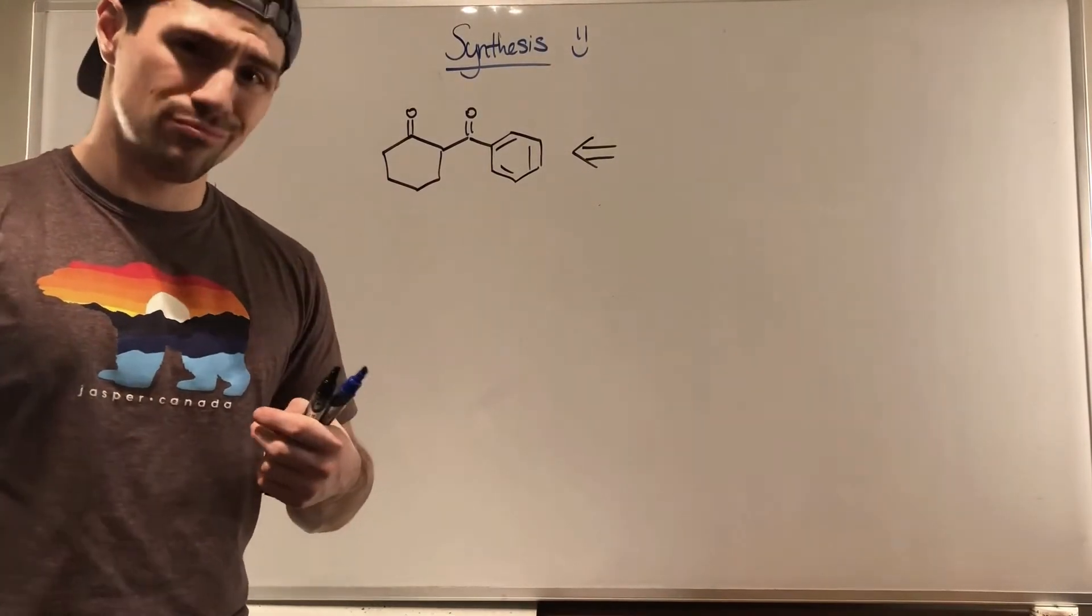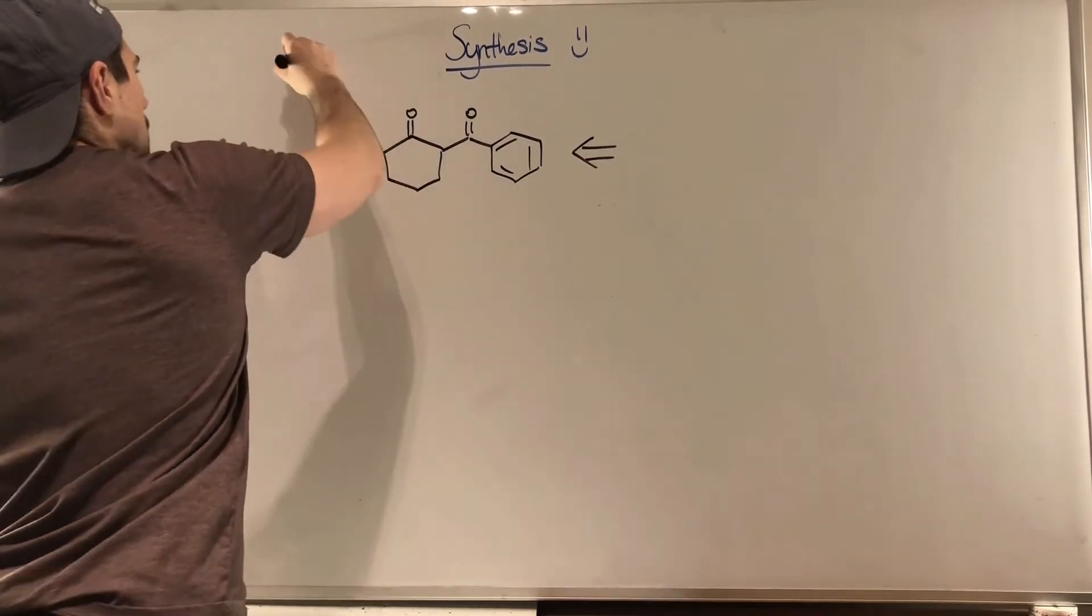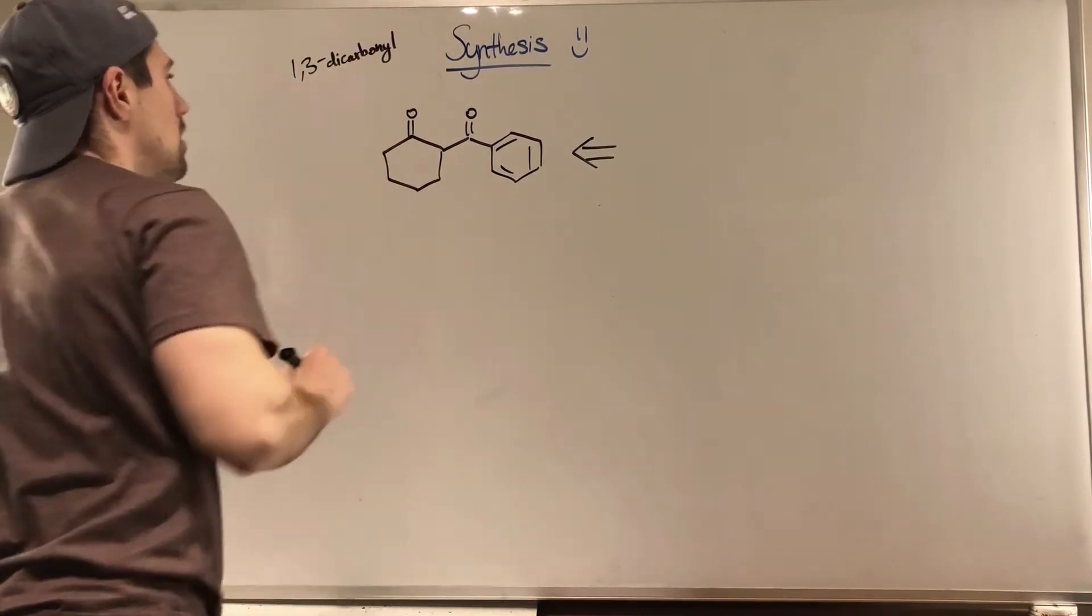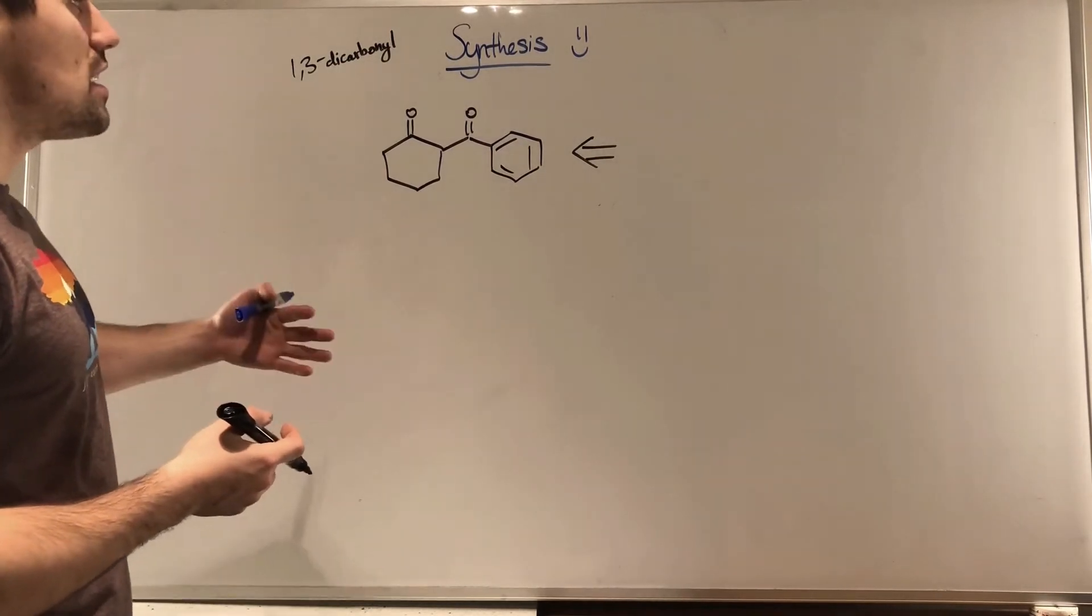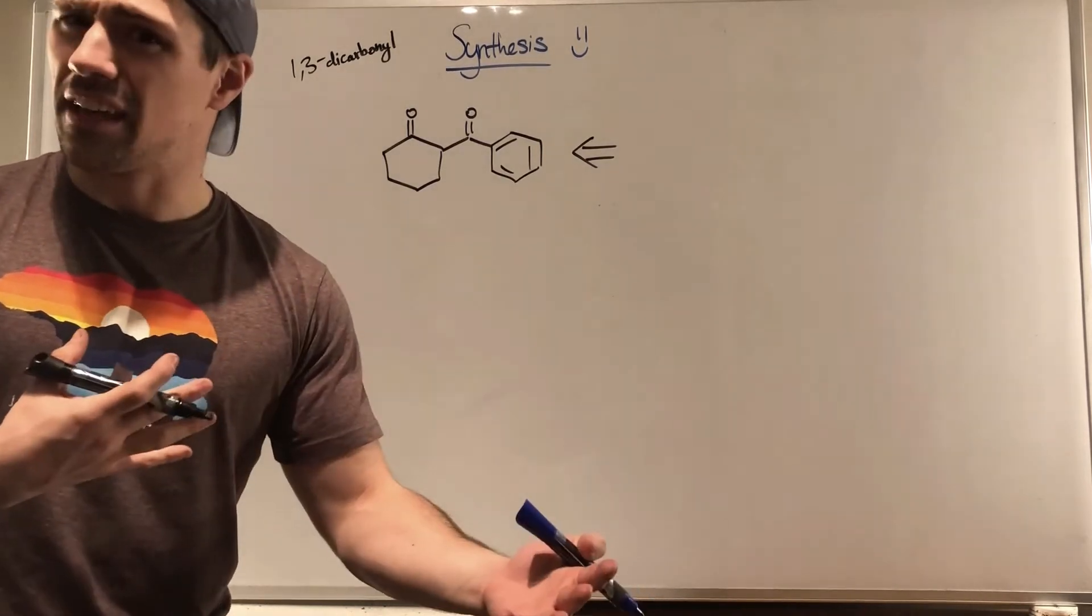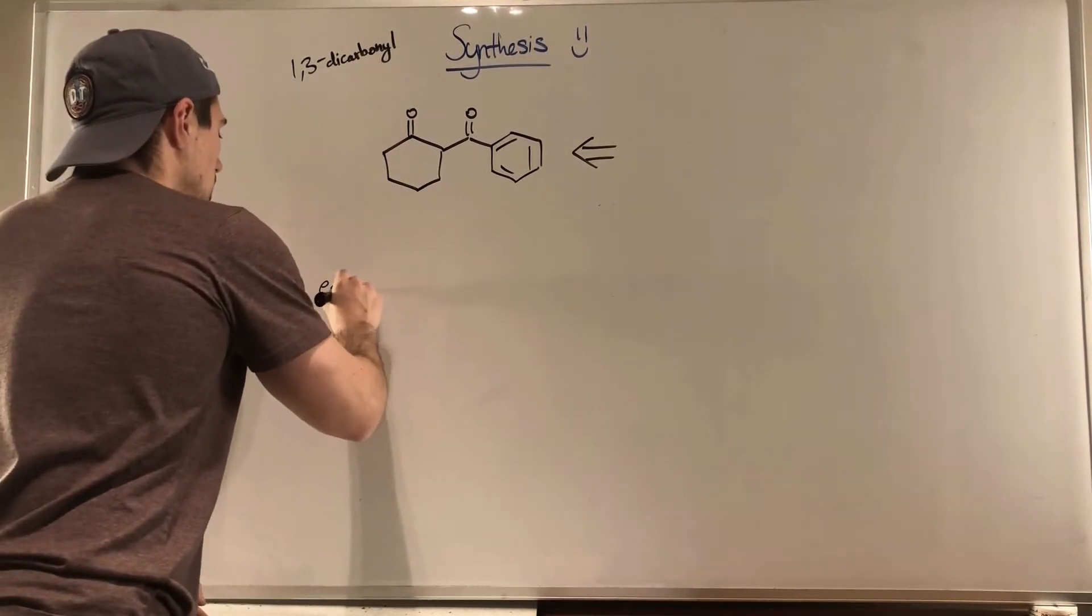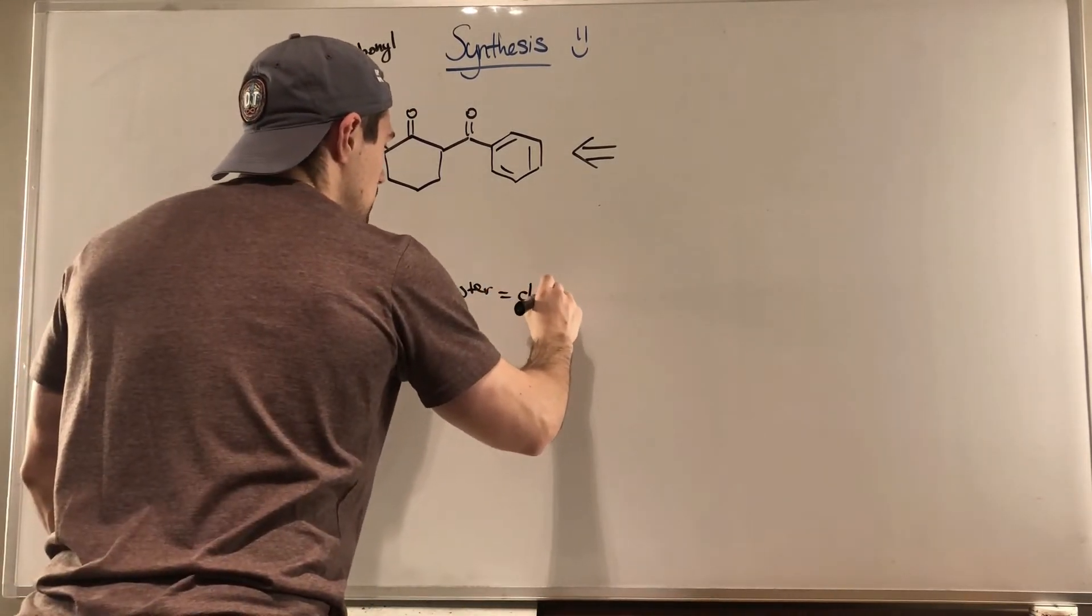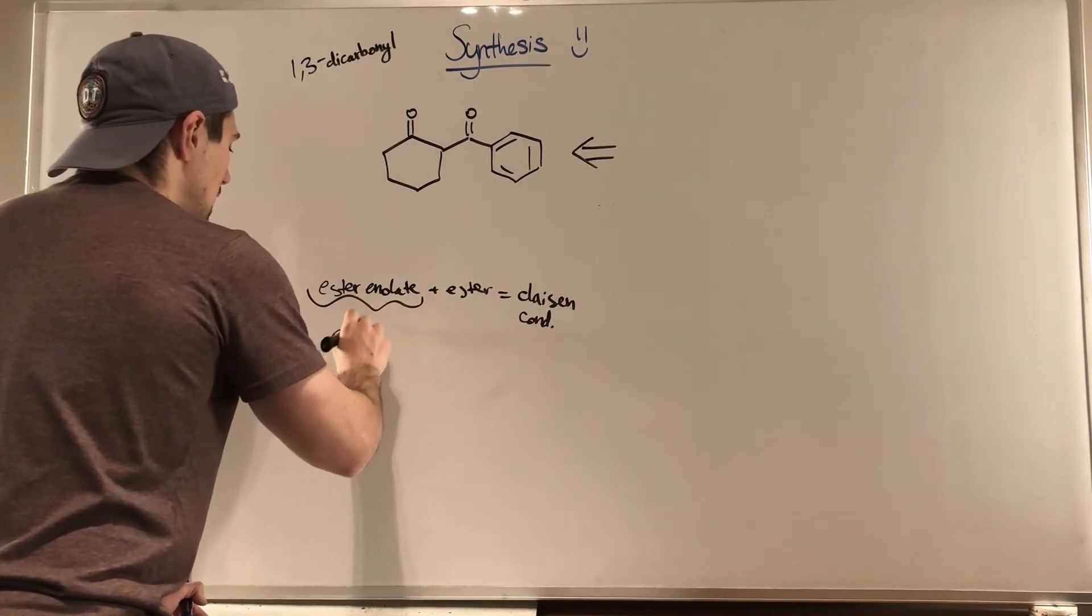Okay gang, example number two. Let's dive in. So if we look at this product right here, clearly we see a 1,3-dicarbonyl. But this is a little bit different than the examples we've been doing in our Claisen condensations and whatnot. So we don't really see any presence of an ester anywhere. So what gives?